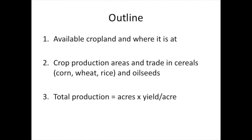The outline of this module is as follows. First, we're going to show where the arable cropland is, which will dictate to a large extent where trade happens. We're then going to talk about crop production areas and trade in cereals and oilseeds. Finally, a major fact: total production will equal acres times the yield per acre. Our next module will talk about trends in yields per acre.